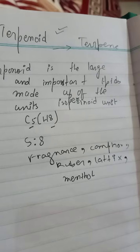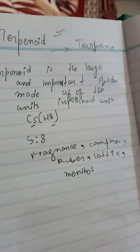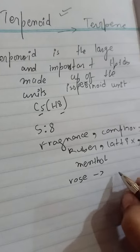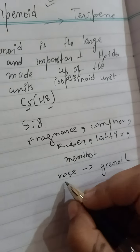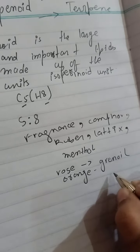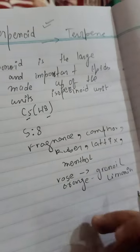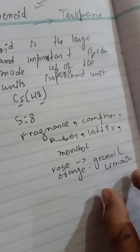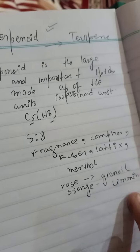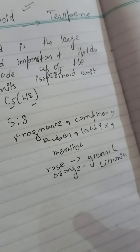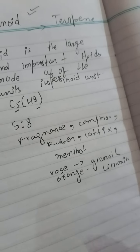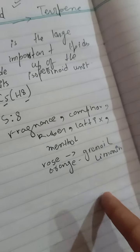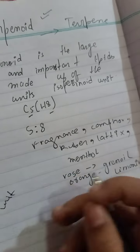One isopenoid unit makes a terpene, and two together form a terpenoid. Examples include rose, which has geraniol oil, and orange, which has limonene. These oils — rose petal oil and orange petal oil — are the fragrances, and terpenes are their basic units.